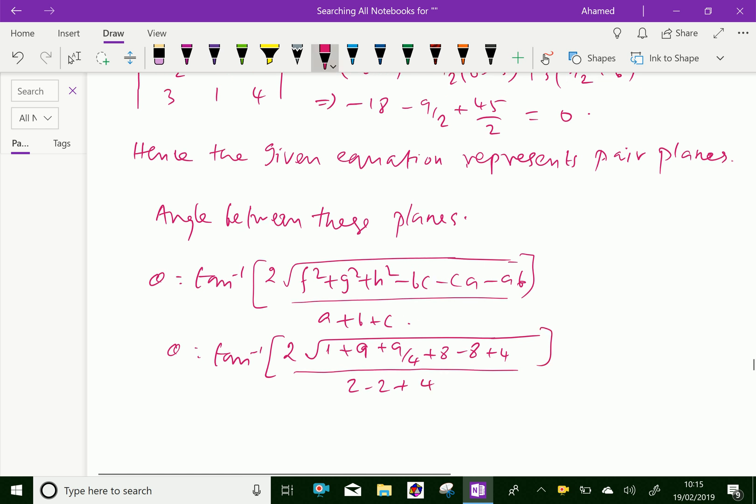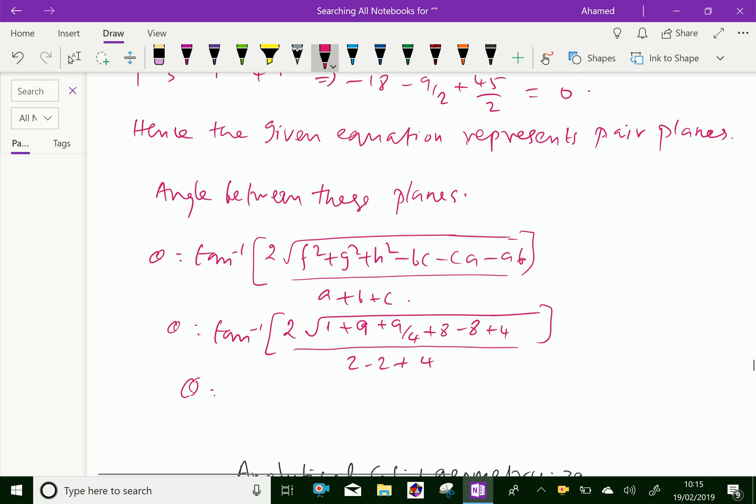We get θ = tan⁻¹(√65/4). That is calculated like tan⁻¹ of square root of 65 over 4.